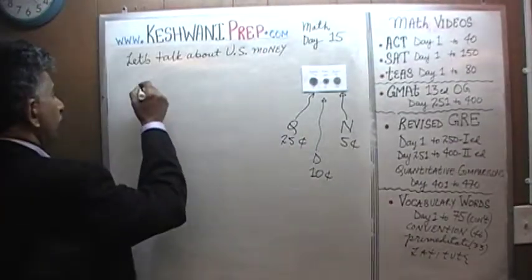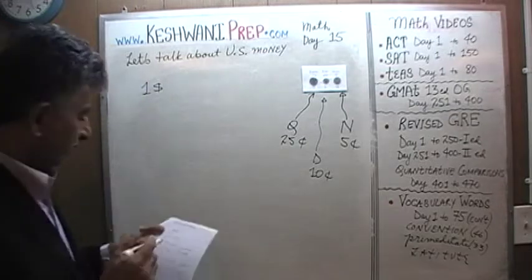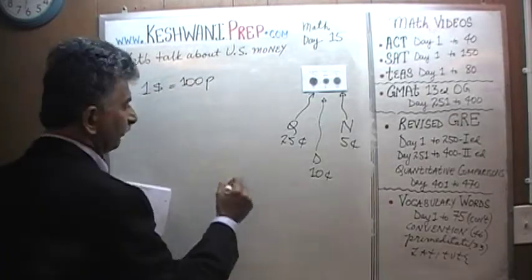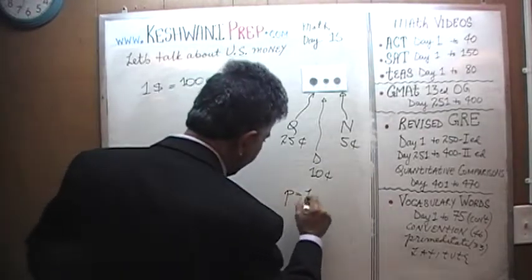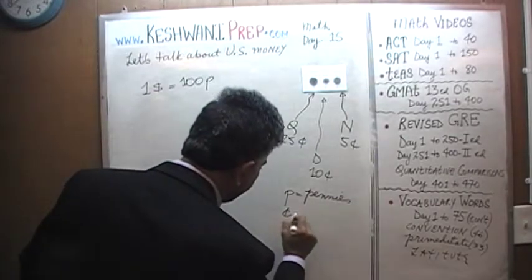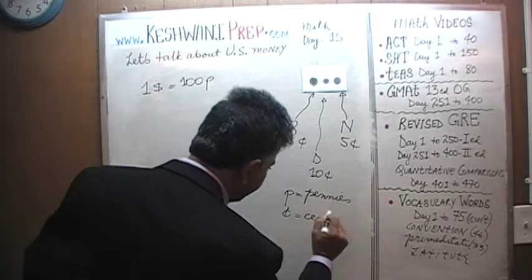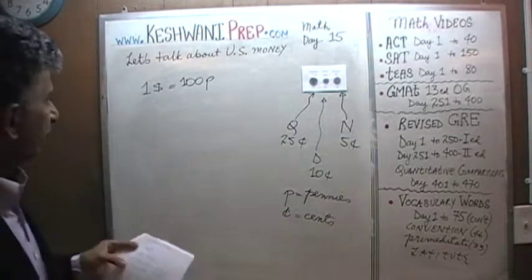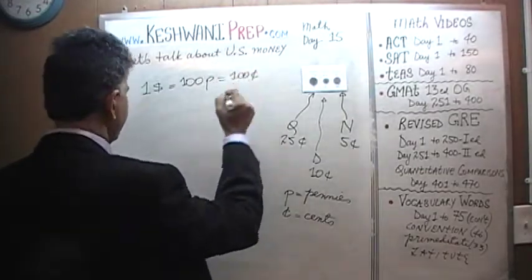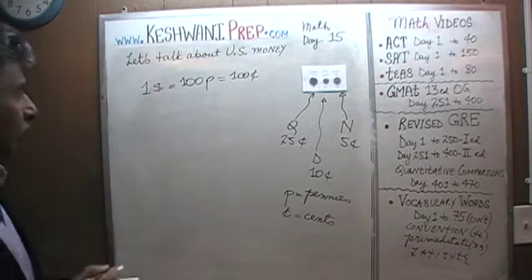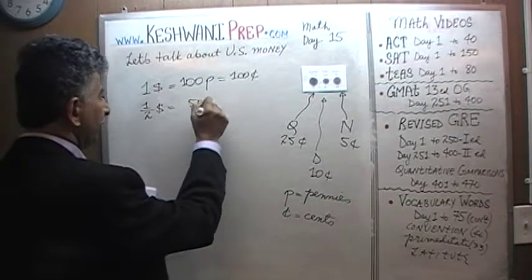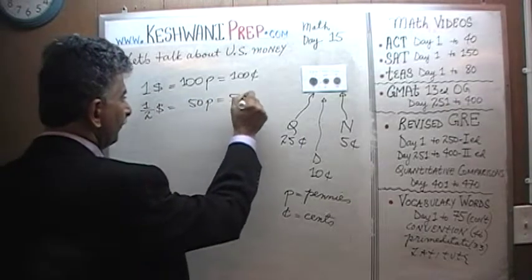We know one dollar is made up of 100 pennies. P stands for pennies, which is the same as cents — they both mean the same thing. One dollar is made up of 100 pennies or 100 cents. And therefore, half a dollar will be 50 pennies or 50 cents.